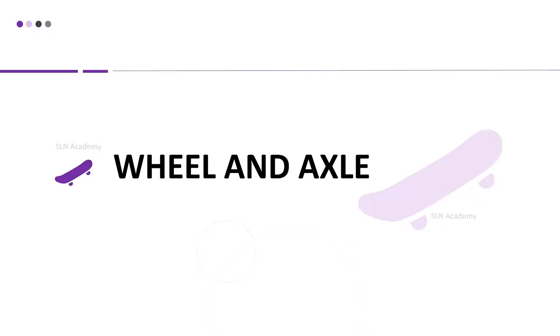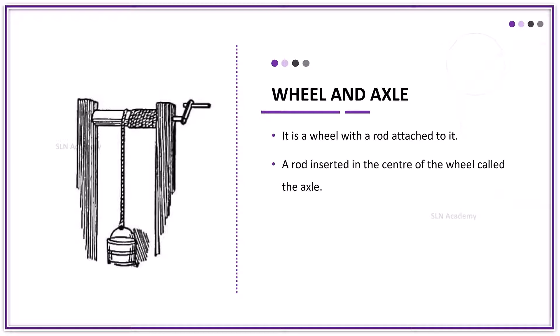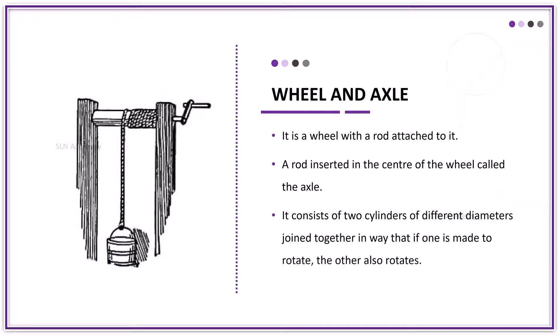Wheel and Axle. A wheel is something that is round and moves in a circular fashion. It can be attached to a bar or a solid object on its center, which is called an axle.